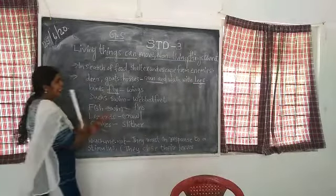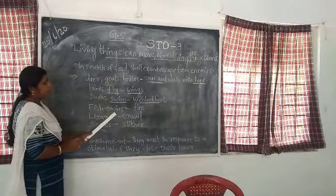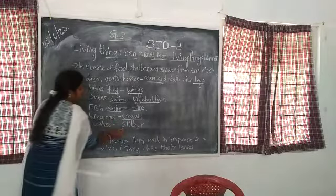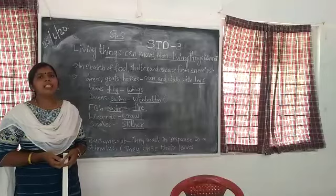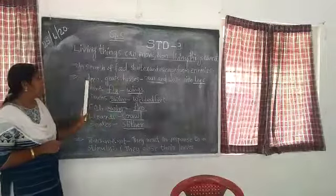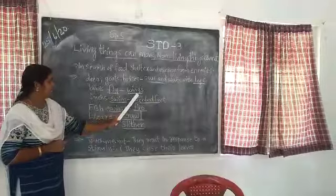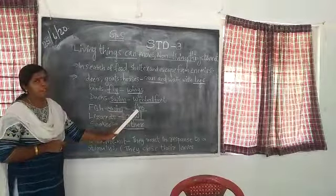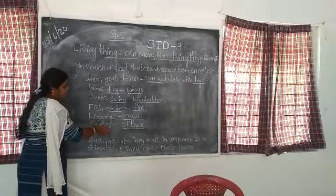Birds fly with their wings. Ducks swim in water with their webbed feet. Fish swim with their fins. Lizards, crow, snails — they slither. Snails do not have legs, so they slither.